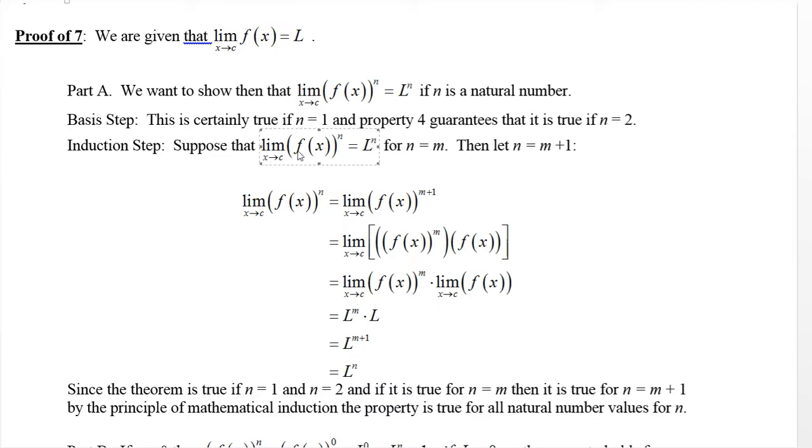So we showed that if this is true for this particular n equals m, then we also get the same result is true when n equals one higher. So if it's true for two, then it's true for n equals three. And if it's true for three, it's true for four. If it's true for four, it's true for five. If it's true for five, it's true for six, and so forth and so on. So the principle of mathematical induction says, well hey, if you can do this every time, then it's true for any natural number n.